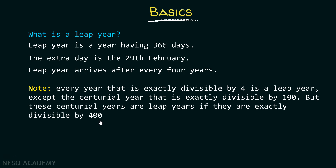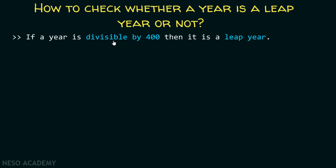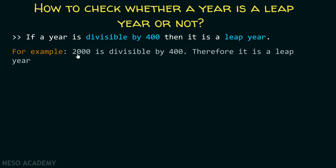After understanding these basics, let's consider the important question: how to check whether a year is a leap year or not? There are some conditions we can use. The first condition is: if a year is divisible by 400, then it is a leap year. For example, 2000 is divisible by 400, therefore it is a leap year.